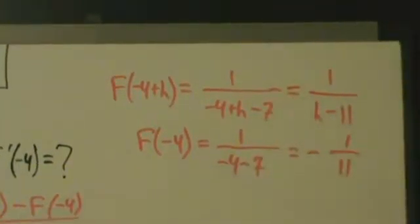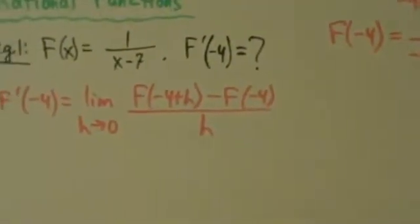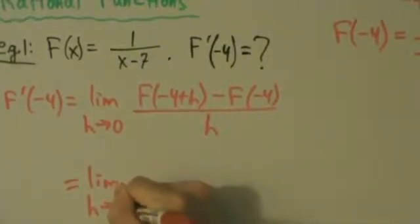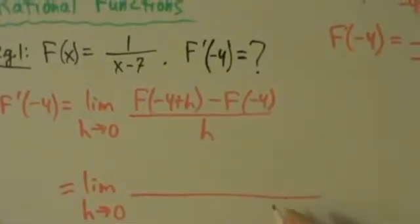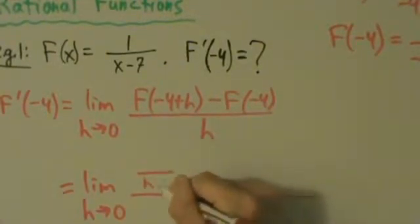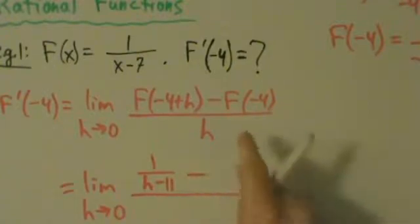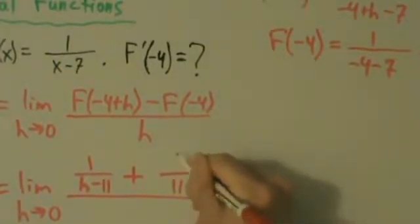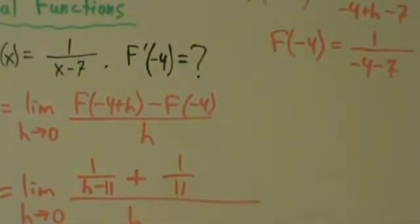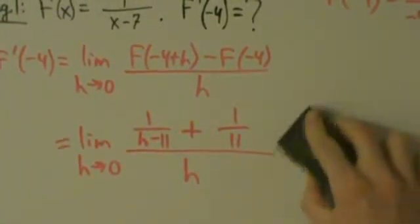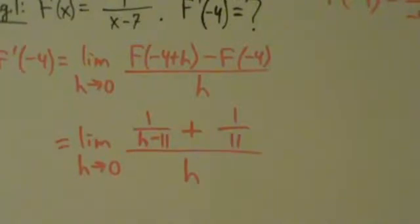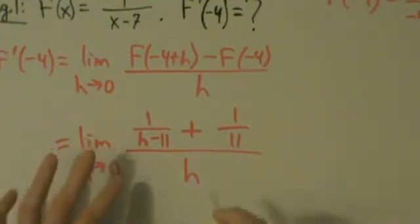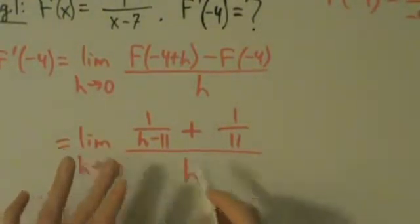Now we're going to take these and put them into our limit expression. So this equals the limit as h goes to 0 of 1 over h minus 11, minus negative 1 over 11 — so that's really plus 1 over 11 — all divided by h. This is a little more complicated than before, but the idea is still the same: simplify so that we can cancel this h out.